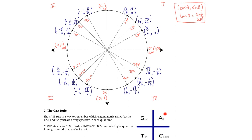In quadrant 1, all trig ratios are positive: x-coordinates (cosine) are all positive, y-coordinates (sine) are all positive, and tan = sin/cos gives positive over positive, so tan is also positive. In quadrant 2, only sine should be positive: x-coordinates (cosine) are all negative, y-coordinates (sine) are positive. Tan = positive/negative, so tan ratios are negative. This holds true for the second quadrant.